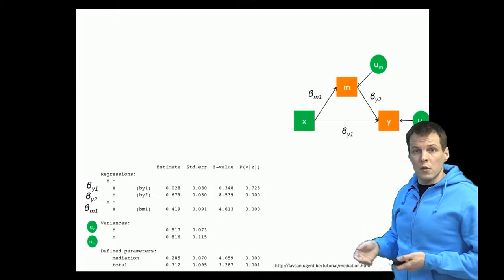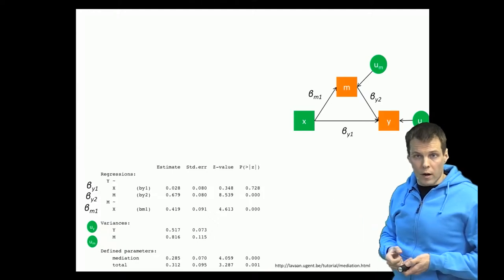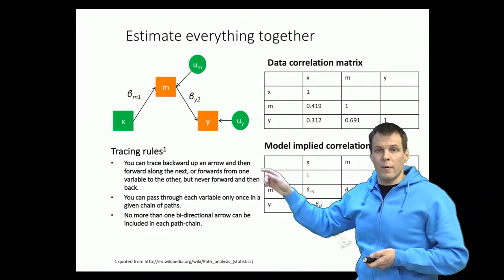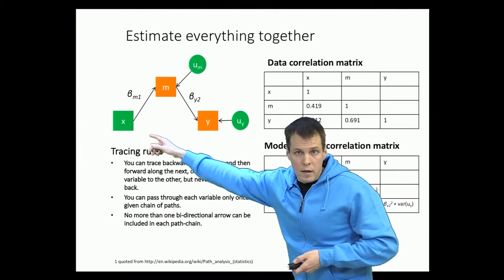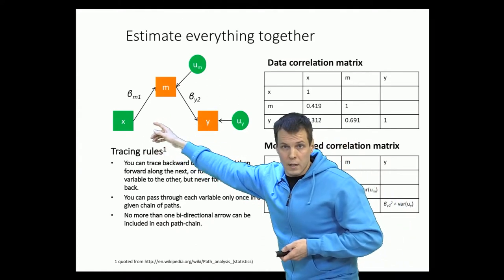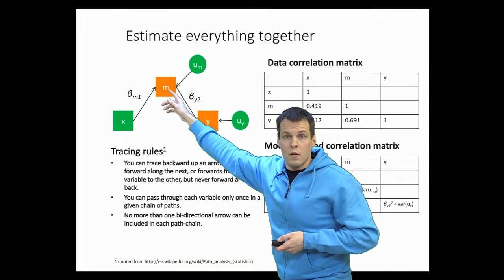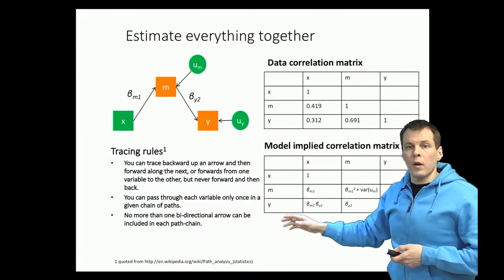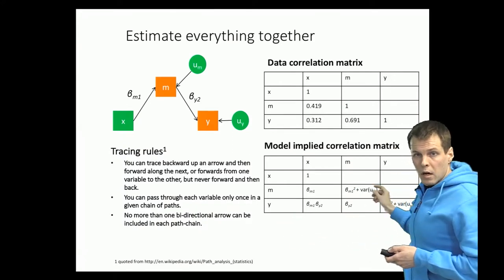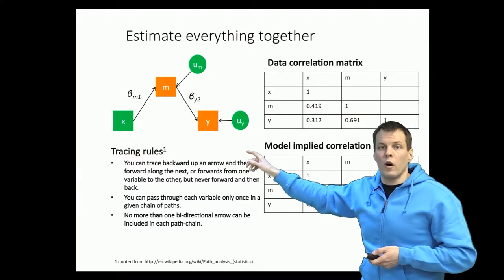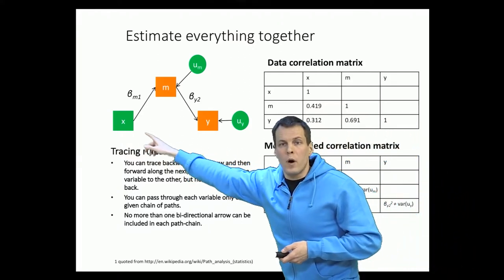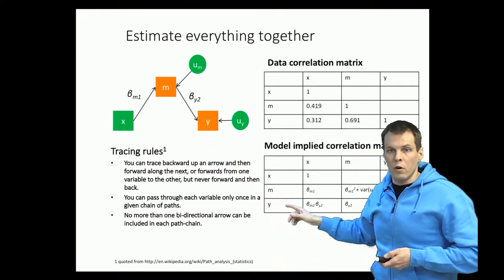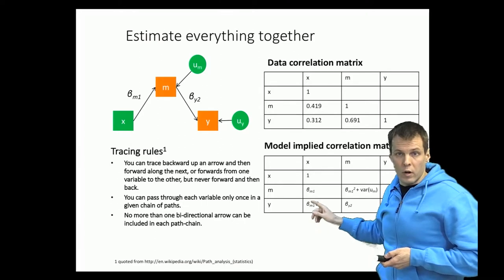There will be differences once we start estimating over-identified models. For example, if we estimate a full mediation model — saying there is no direct path from x to y — we assume all effects of x on y go through m. Applying the tracing rules, the equations are simpler: the only path from x to y is beta_m1 times beta_y2, with no direct path.